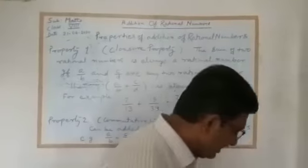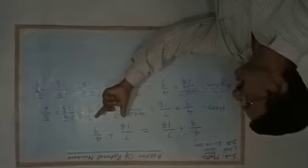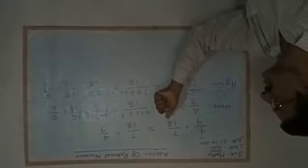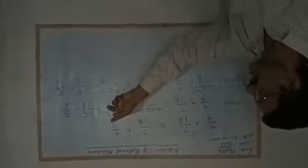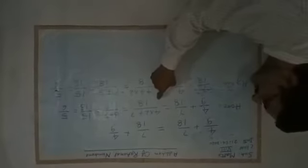Now I want to show you an example for this. For example, 4/9 plus 7/18 gives the same result as 7/18 plus 4/9. Here we have just changed the order — in the first arrangement the order is 4/9 then 7/18, and in the second it is 7/18 then 4/9. Let us solve the LHS: 4/9 plus 7/18 gives the result equal to 5/6.